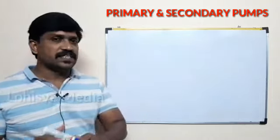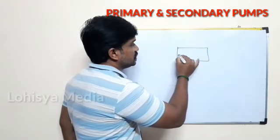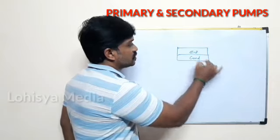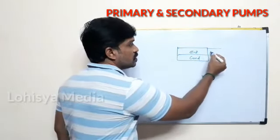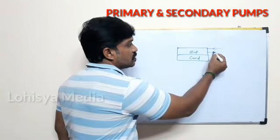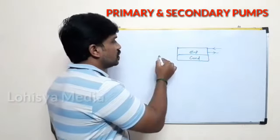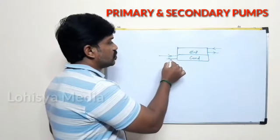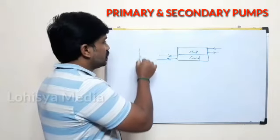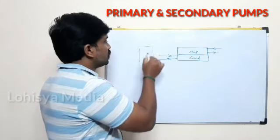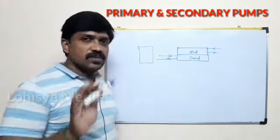The basic diagram is: this is the Evaporator and Condenser. In the chilled water system, water is available in the evaporator and flows out as chilled water. In the condenser, for water-cooled chillers, a cooling tower is compulsory because we have to cool the water using the cooling tower.